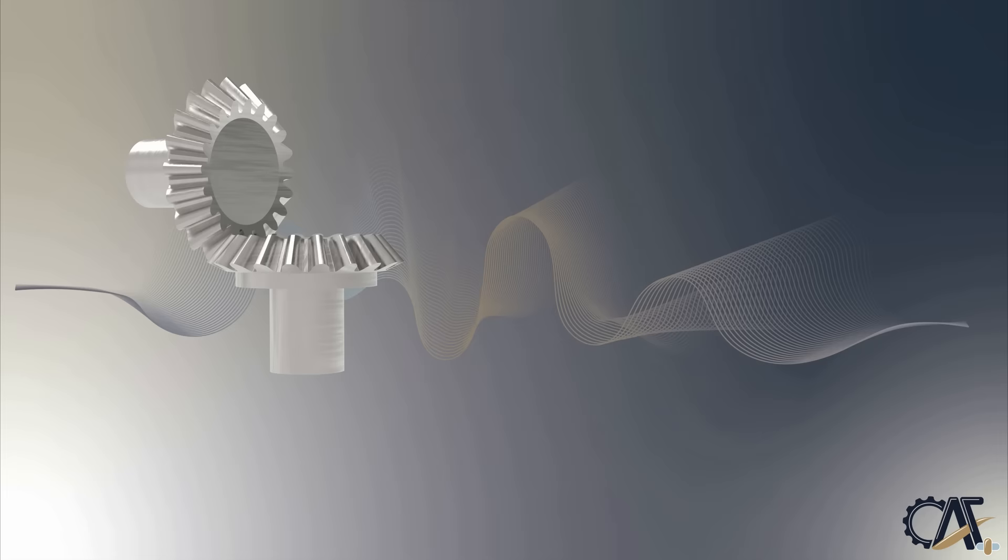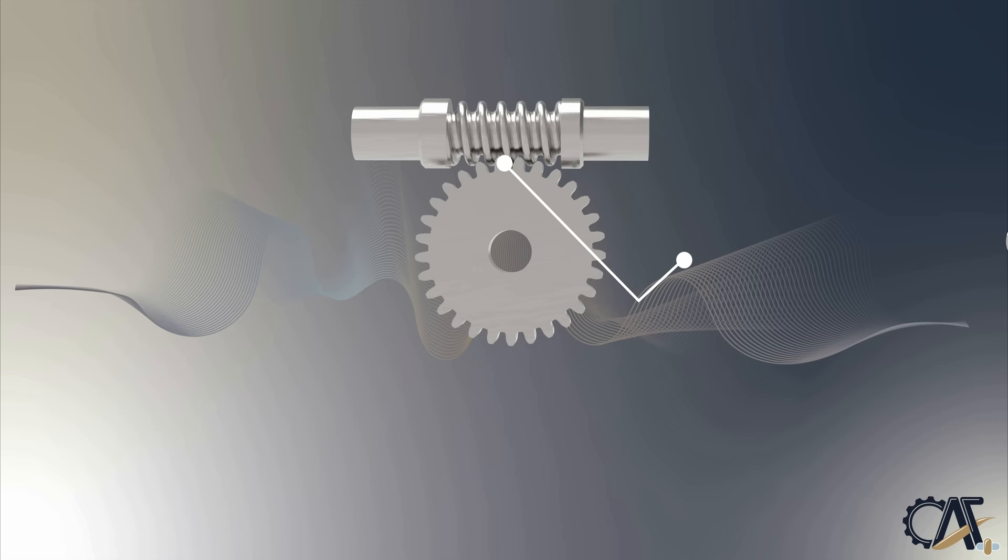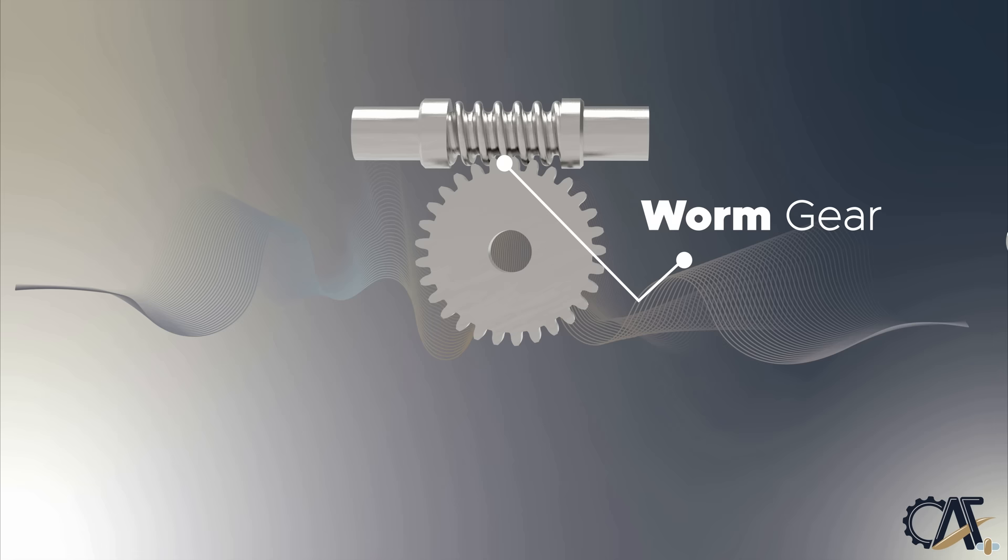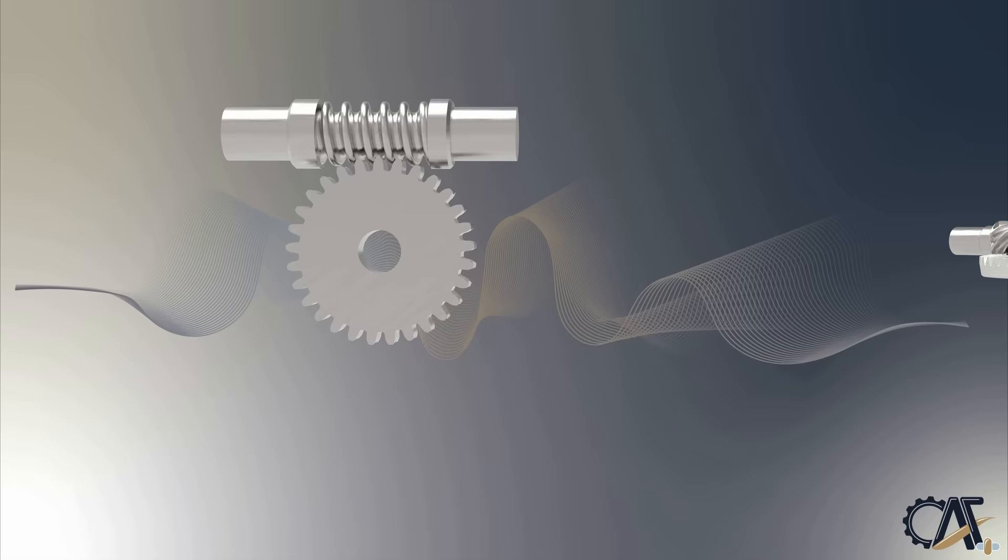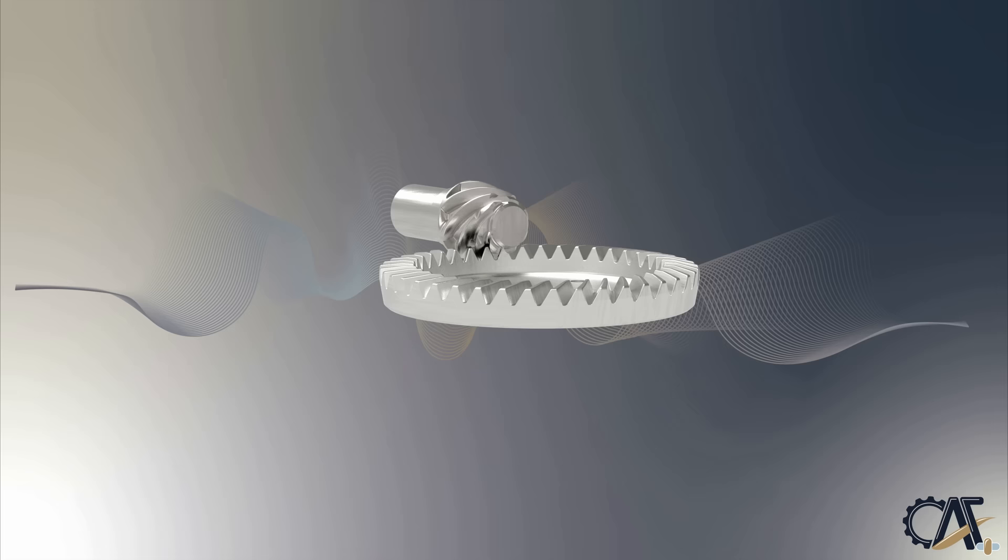Worm gears are used to transmit power at 90 degrees on non-intersecting shafts. Worm gears produce thrust load and are good for high shock load applications. A screw shape cut on a shaft is the worm, and the mating gear is the worm wheel. The main disadvantage of worm gears is their low efficiency, which can be close to 15% due to the high friction and associated axial stresses.